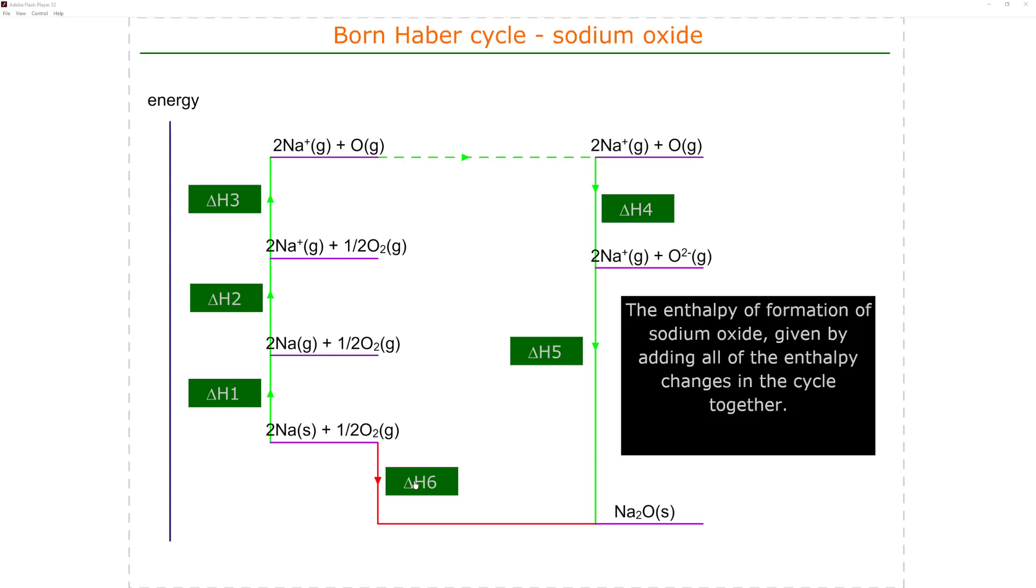What we need to do is create the ions to put them in their place in the lattice. We follow the cycle around the outside, starting with sodium. We turn solid sodium to gas - this enthalpy change is the enthalpy of atomization of sodium multiplied by two. Now we have two gaseous moles of sodium atoms.